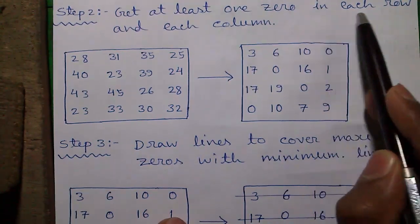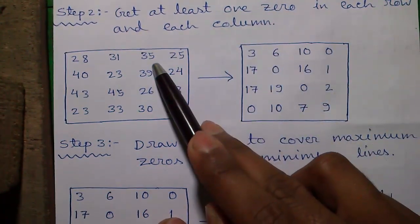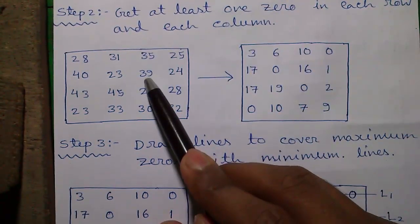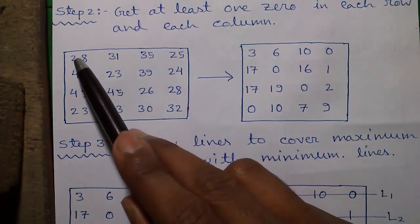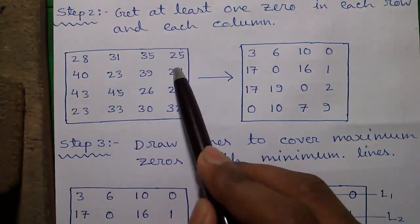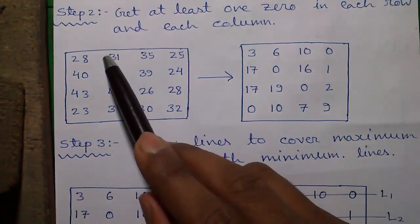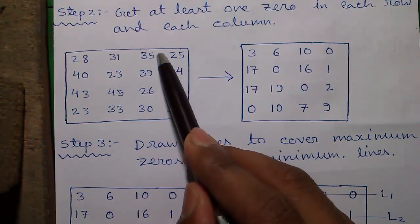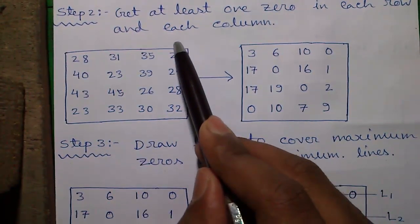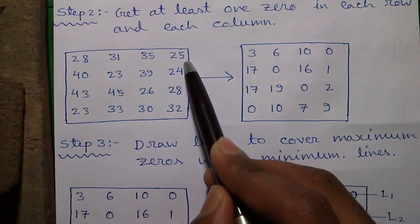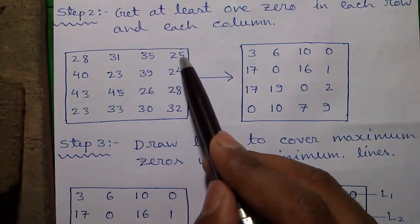Step 2: Get at least one 0 in each row and each column. I have rewritten the matrix here. To get at least one 0 in each row you can search for the smallest number in each row. So here in row 1 the smallest number is 25 and subtract that number from each of the numbers in row 1.